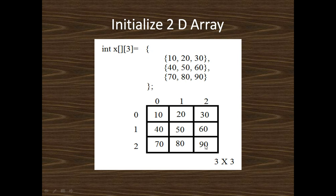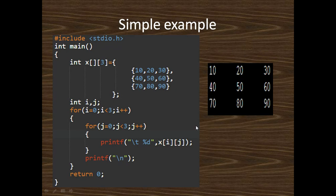This is a 3x3 matrix. In C language we define the 2D array named x, initialize it, and use a for loop to print the values. We use nested for loops: the first for loop — for(i=0; i<3; i++) — implements the row concept, and the second for loop — for(j=0; j<3; j++) — implements the column concept.